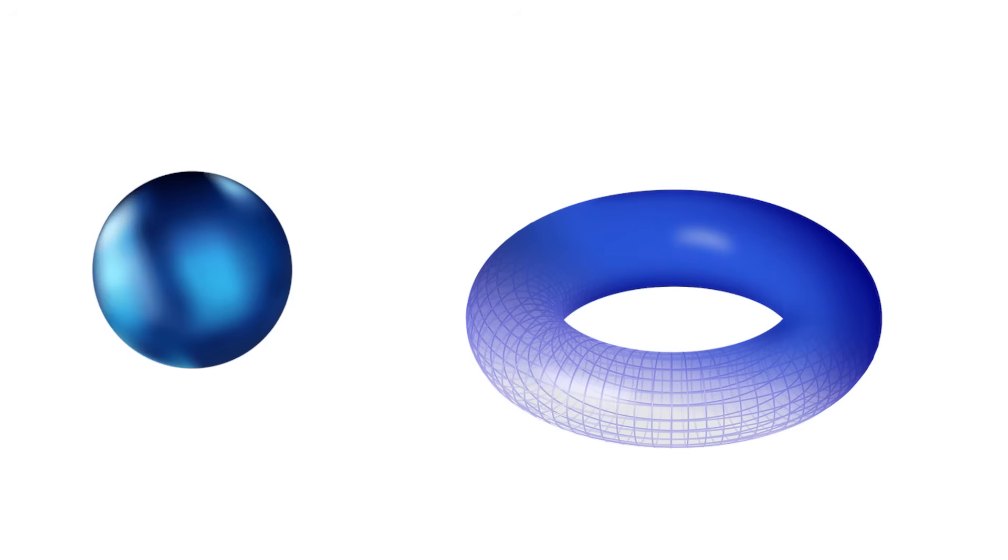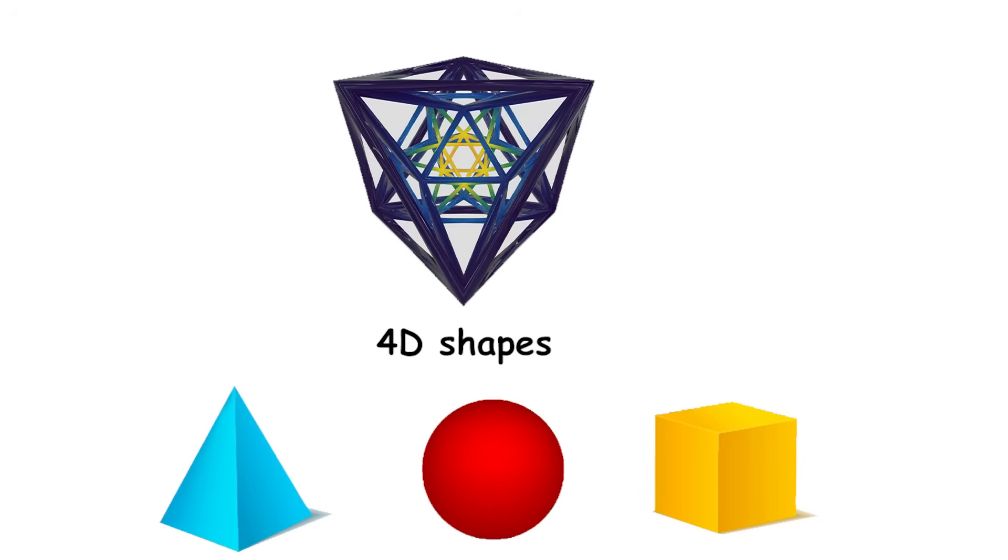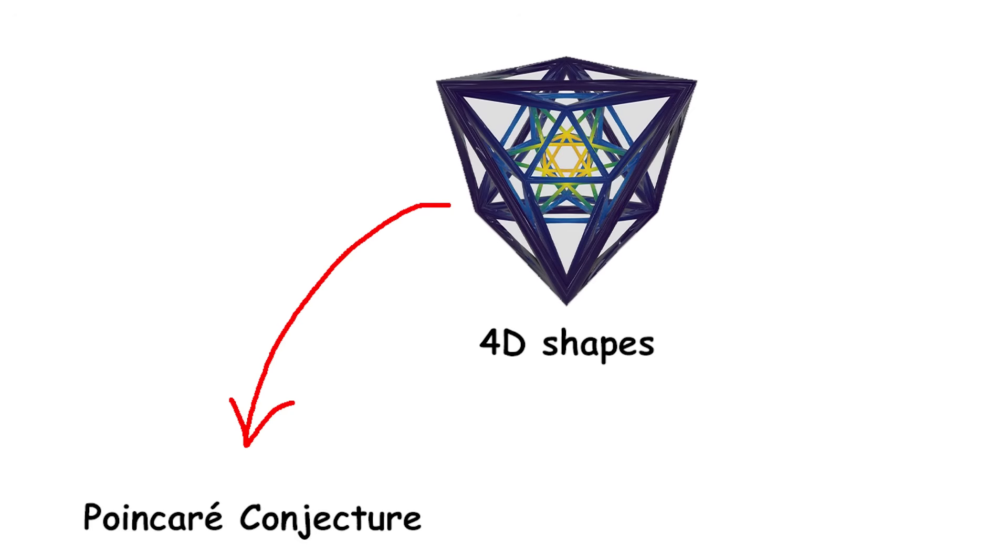When it comes to 3D shapes like a ball or a donut, it's not too hard to figure out what they are. In a way, a ball is the simplest 3D shape of all. Poincaré wondered if the same thing is true for 4D shapes. He thought that maybe there is one 4D shape that is the simplest, just like how a ball is the simplest 3D shape. This idea ended up becoming known as the Poincaré Conjecture.